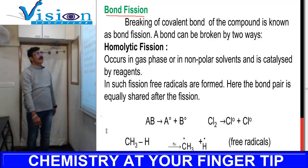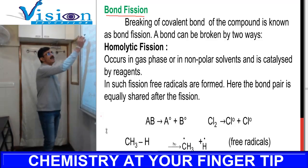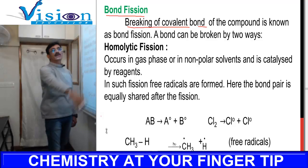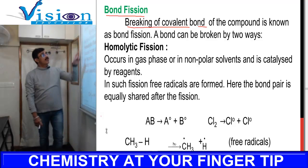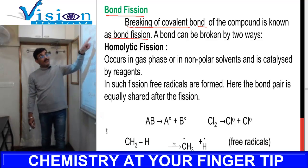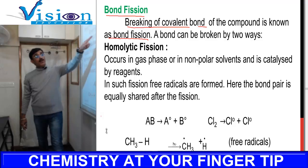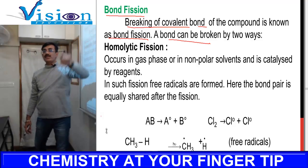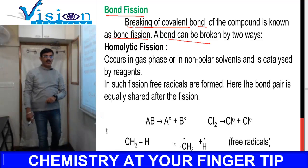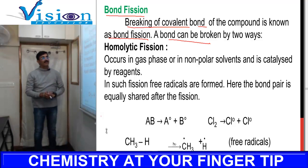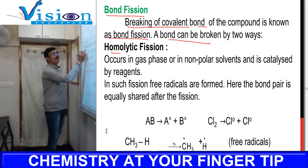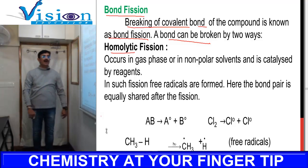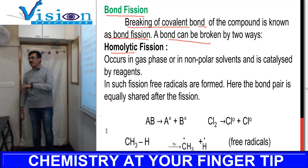Bond fission means the breaking of any covalent bond of a compound. A bond can be broken by two ways: the first is homolytic fission and the second is heterolytic fission.